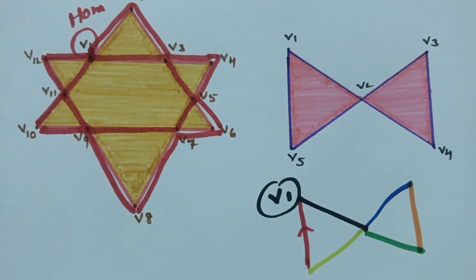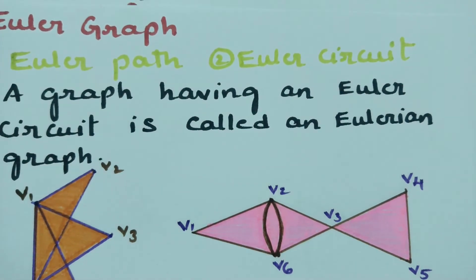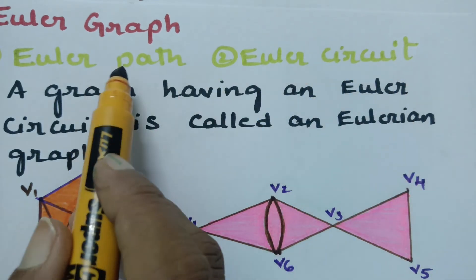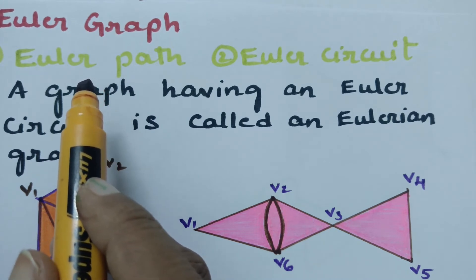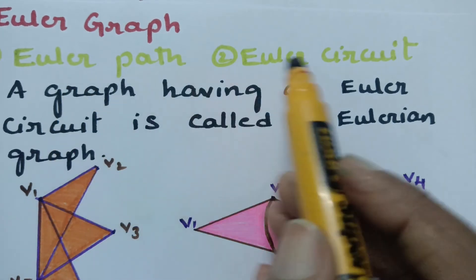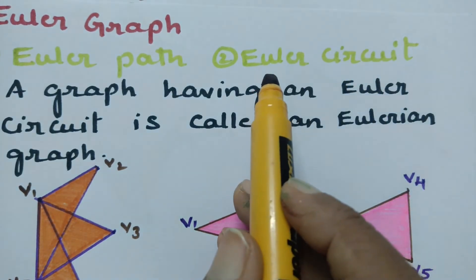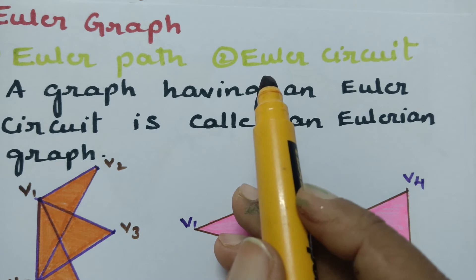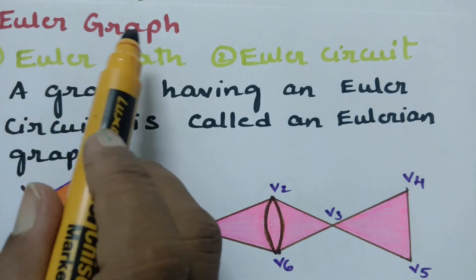Now the most important question: if any graph is given and asked whether it is an Eulerian graph, we have to check both cases — Eulerian path and Eulerian circuit. Euler path: each edge covered once, no repetition, vertices may repeat. Euler circuit: cover all edges and return to the starting vertex. If both exist, then the given graph is an Euler graph.